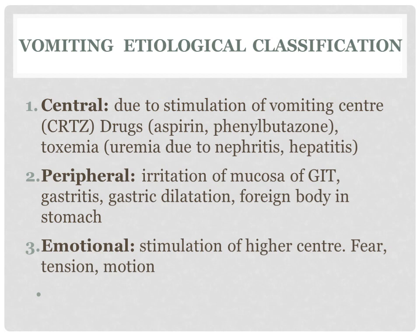The second is peripheral etiology. Here there is irritation of the mucosa of the gastrointestinal tract — gastritis, gastric dilatation, foreign body in the stomach, dilatation of a portion of the intestine — this also stimulates the vomiting center from the periphery, hence peripheral etiology. The third is emotional etiology, where there is stimulation of a higher center, either due to fear, tension, or motion, causing vomiting. Motion sickness is part of this — in motion sickness there is motion, and fear is also present, and that is why there is vomiting.